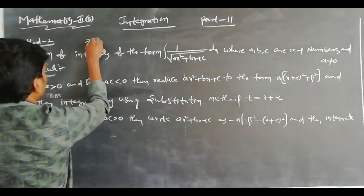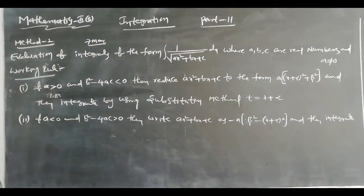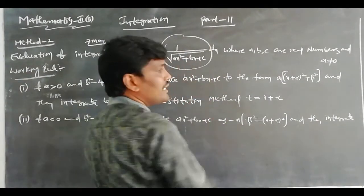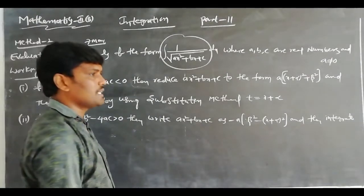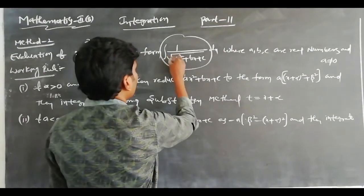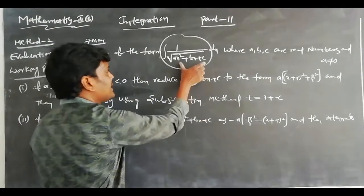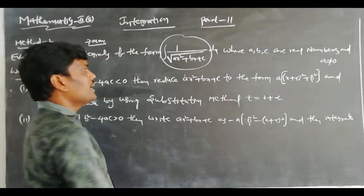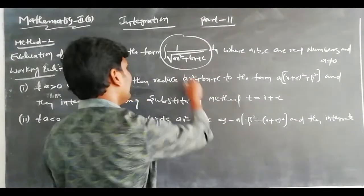Method 2 deals with integration in the form of ∫1/√(ax² + bx + c). The difference between Method 1 and Method 2 is that Method 1 does not have a square root, while Method 2 has a square root expression. Here a, b, c are real numbers and a must not equal zero.